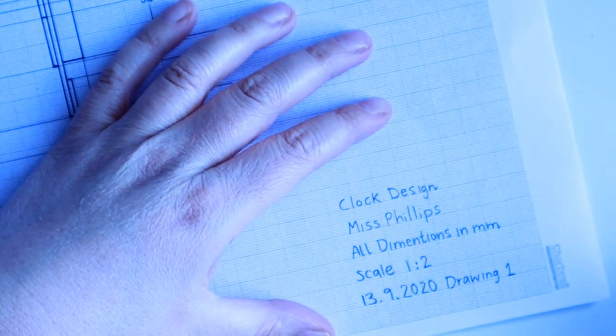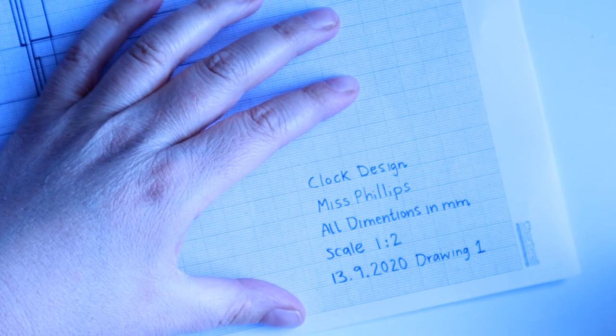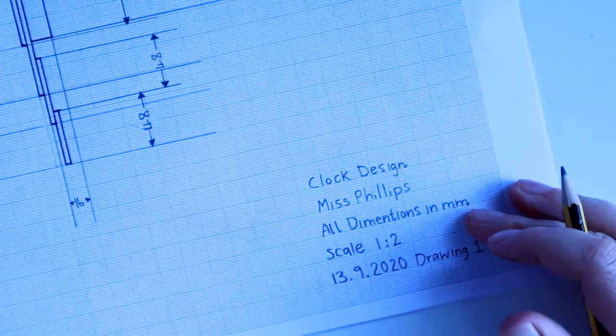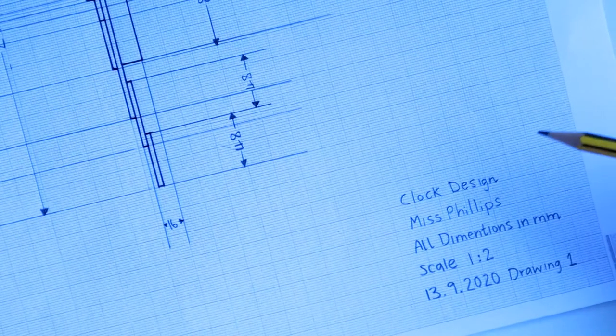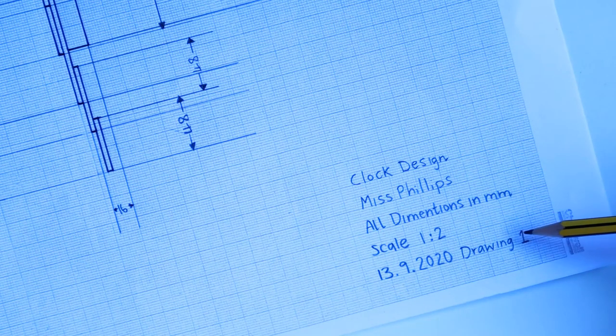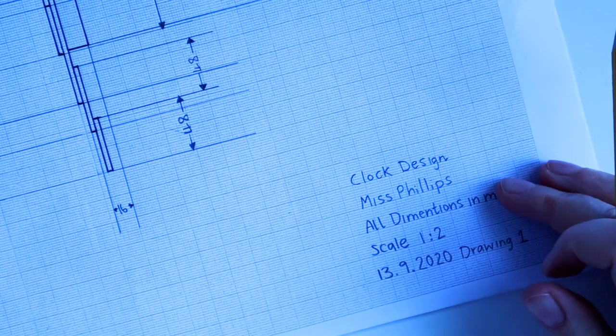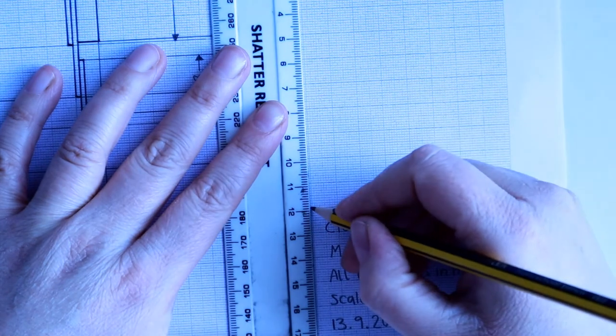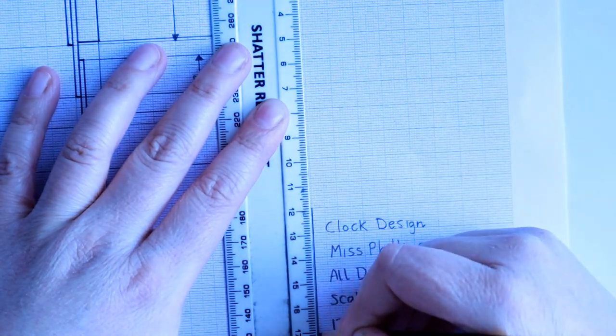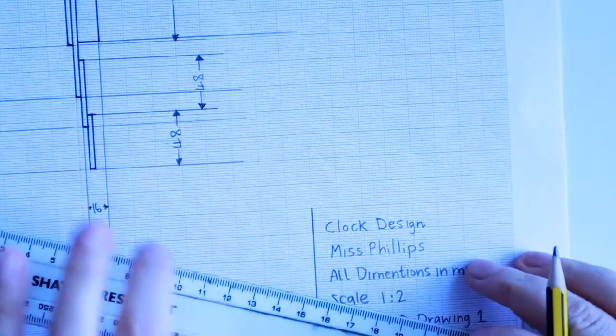So in the development of a design idea you might do several versions of this. So if you're working from a, this is called a working drawing, the person that's working from it needs to know what version they're working from. Finally, I'm just going to draw a box around this information.